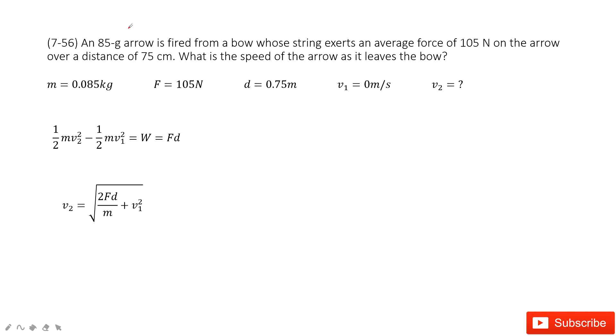In this problem, we have an object. The mass is given, and the initial velocity is stationary. We need to find the final velocity. At the same time, we have a force of 105 N acting on this object, moved a distance of 0.75 m. So this is all the given quantities.